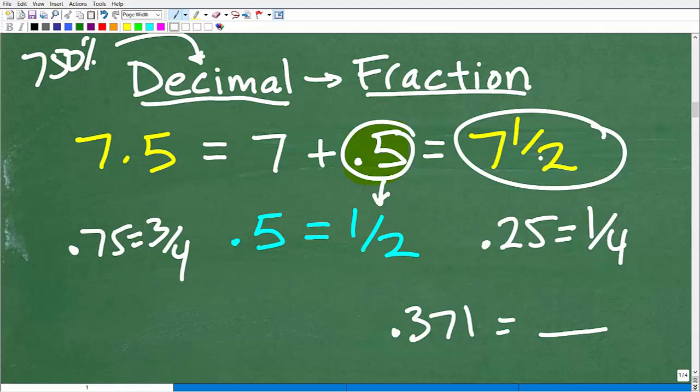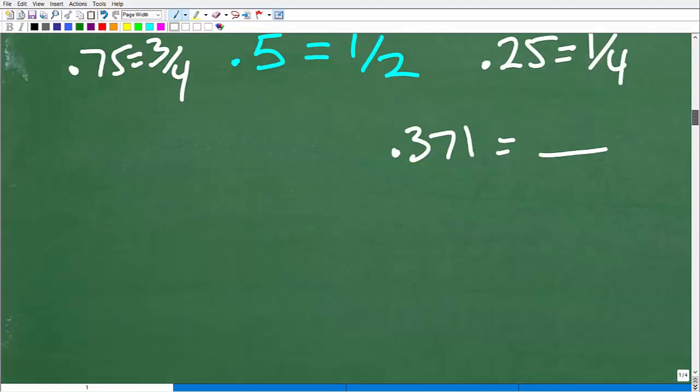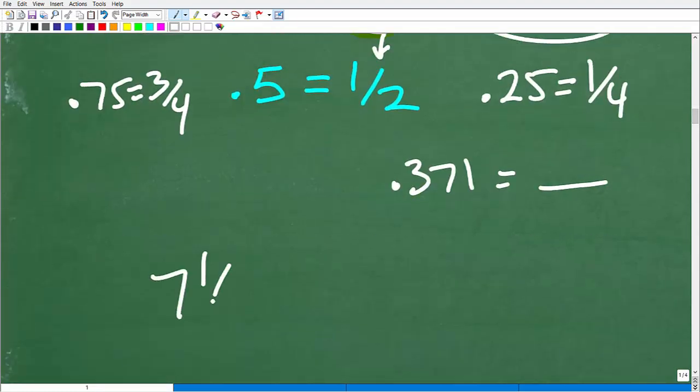No need to have to write this as 15 halves. In other words, some of you out there have been trained by some of your math teachers that you always have to take this mixed number and write it as an improper fraction. In other words, 7 and one-half, you're kind of like, oh, I've got to take this step. This is not okay. Take 2, multiply it by 7. That's 14 plus 1. That's 15 halves.